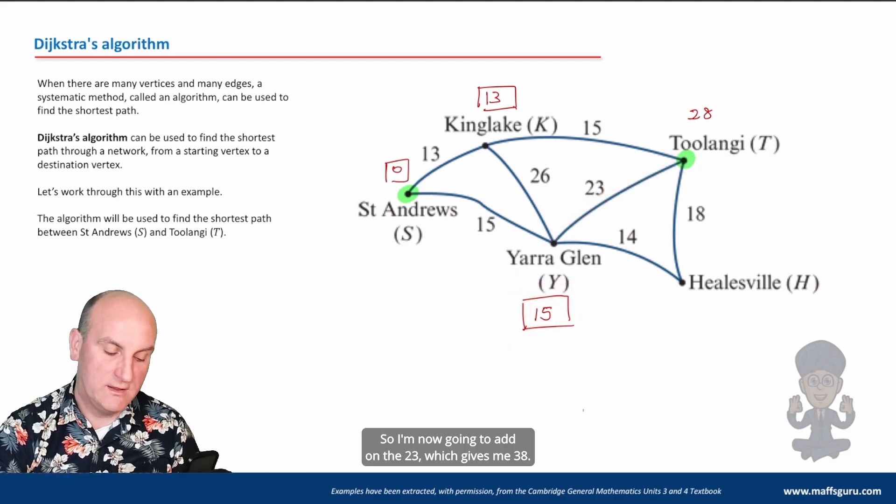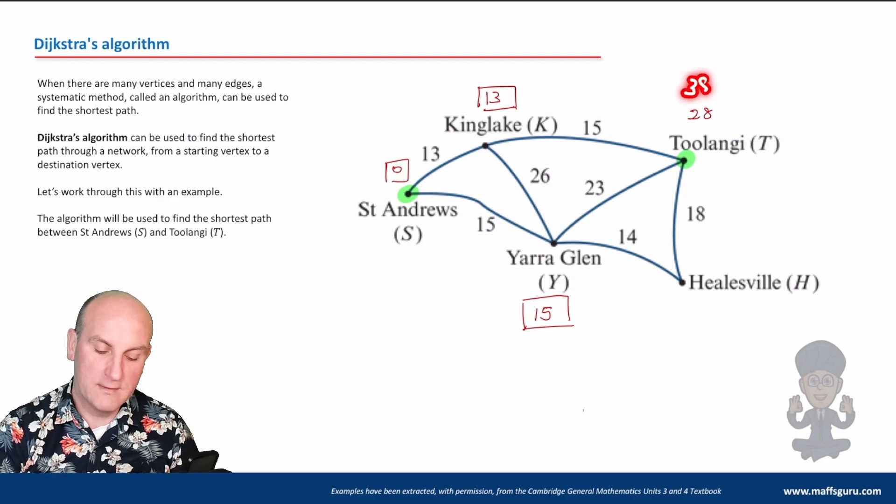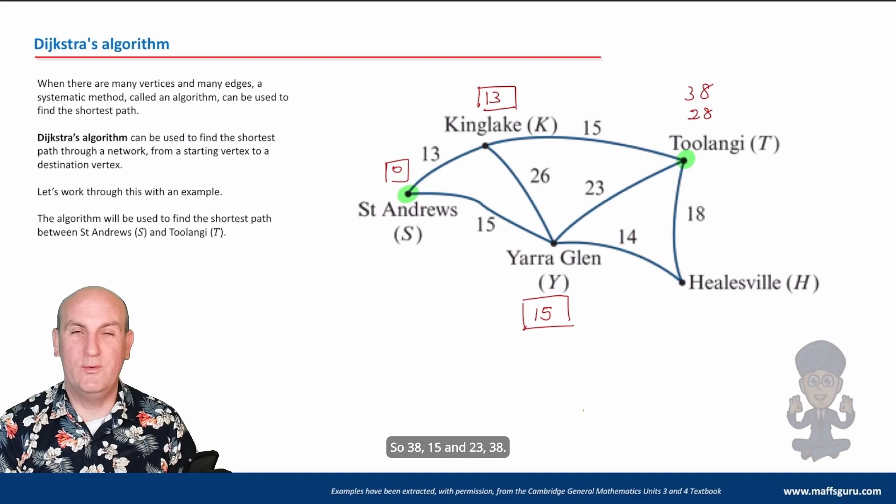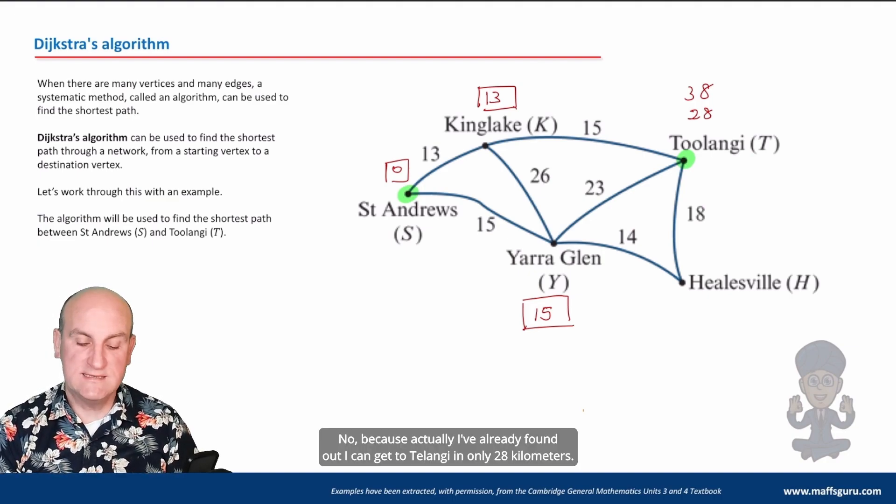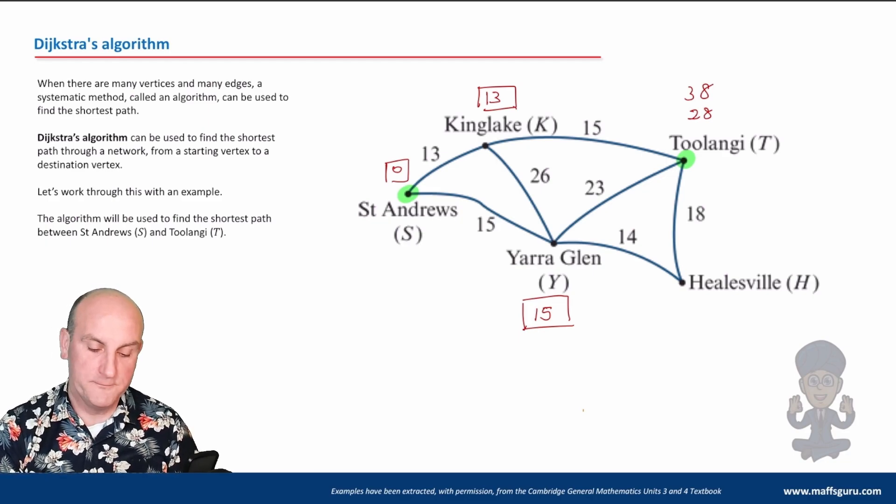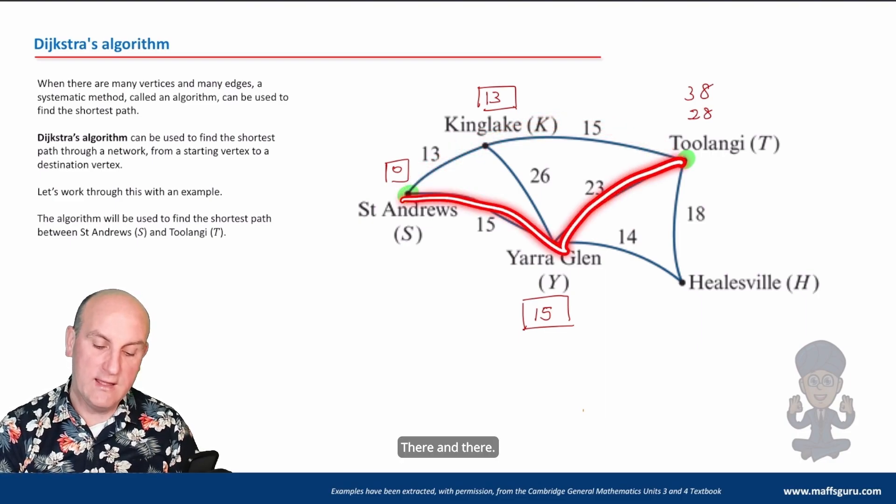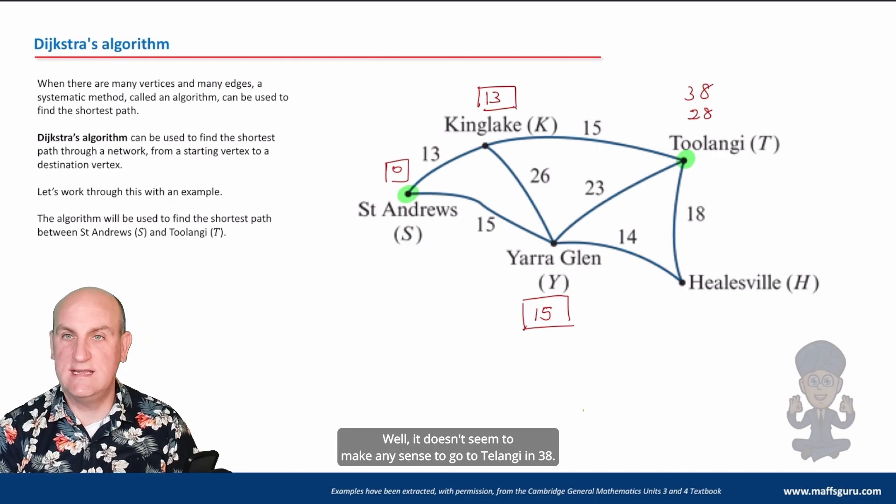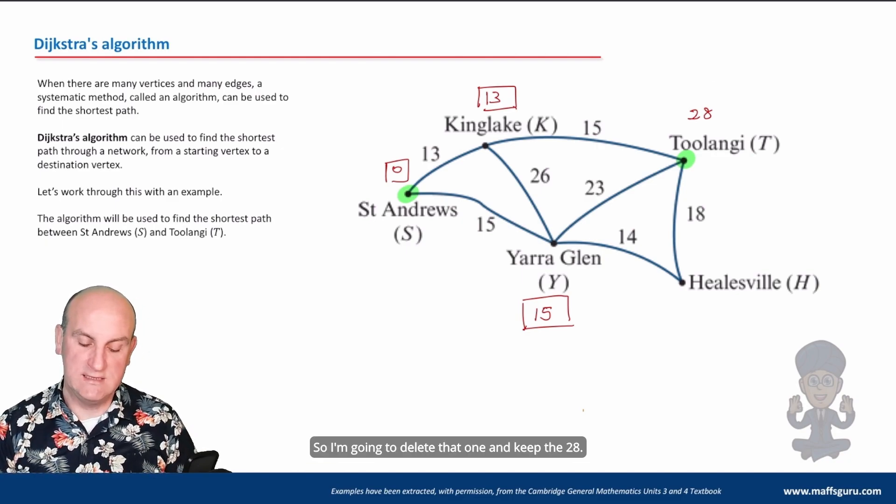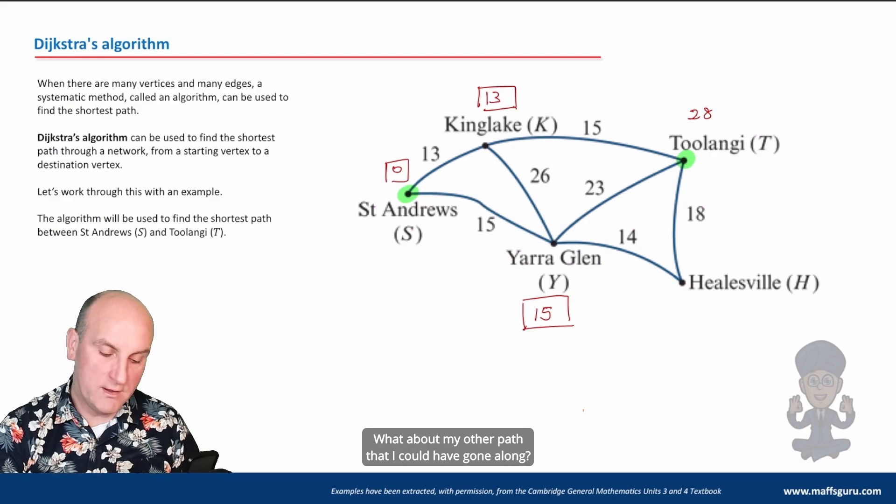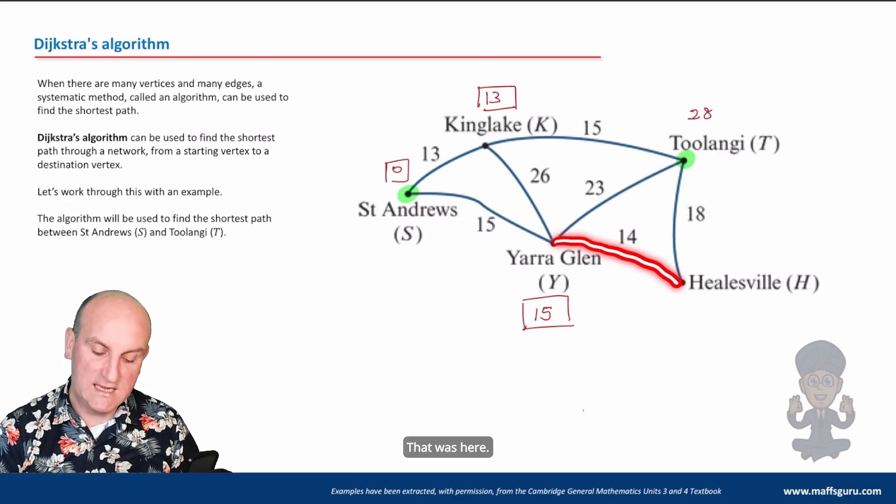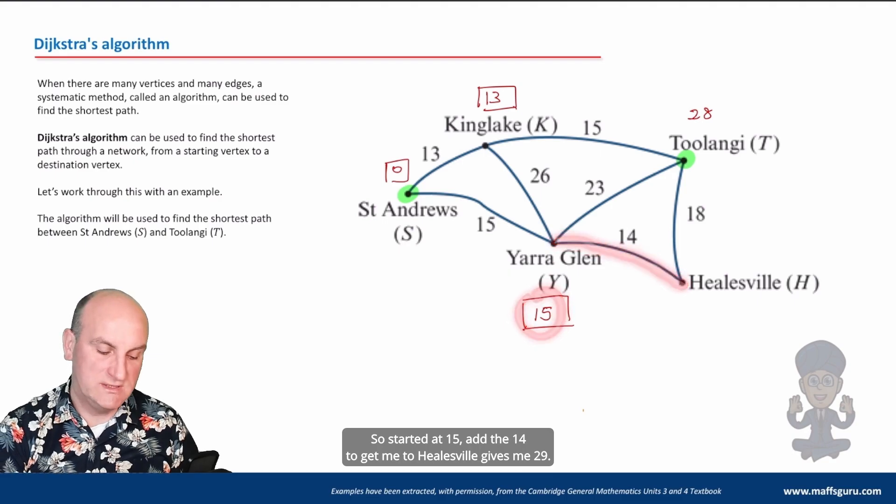Okay, well I'm at Yarra Glen now, I've already got 15 kilometers, so I'm now going to add on the 23, which gives me 38, he says writing in highlighter. So 38, 15 and 23 is 38. Well, am I going to write down the 38? No, because actually I've already found out I can get to Toolangi in only 28 kilometers. All right, I can get to Toolangi in 28, so I can either go that way to Toolangi or I can go—what did I say—there and there. Well, it doesn't seem to make any sense to go to Toolangi in 38, so I'm going to delete that one and keep the 28.